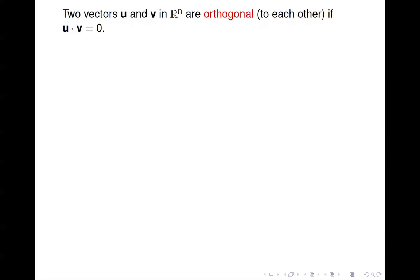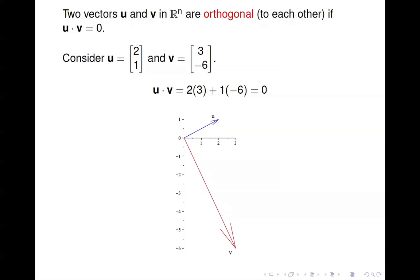We say two vectors are orthogonal to each other if their inner product is zero. Orthogonal means it looks like they're perpendicular. As you see here, here's a couple vectors, (2, 1) and (3, -6). If you take the inner product, you end up with zero. And if you look at those plotted, then you see a right angle there, so they are orthogonal.